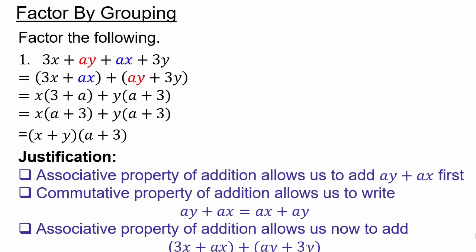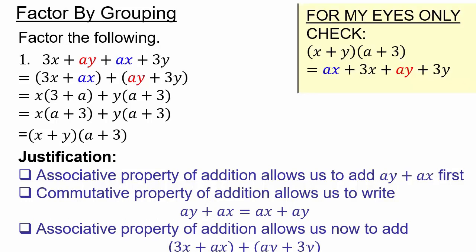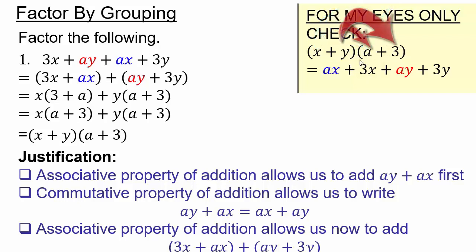The commutative property of addition lets us write 3 plus a as a plus 3. So x times a plus 3 plus y times a plus 3 means the greatest common factor is a plus 3, giving x plus y times a plus 3. Check: x times a is ax, x times 3 is 3x, a times y is ay, and y times 3 is 3y — exactly what we started with. The commutative and associative properties allow us to rearrange the terms to match the original problem. Always match every step with its justification, and keep your toolbox of properties handy.